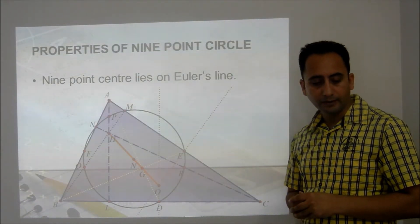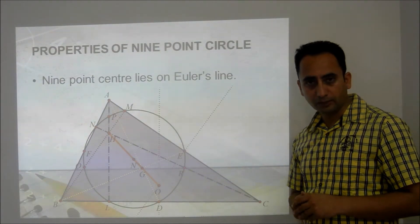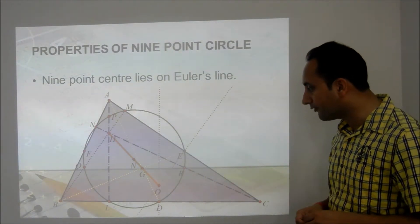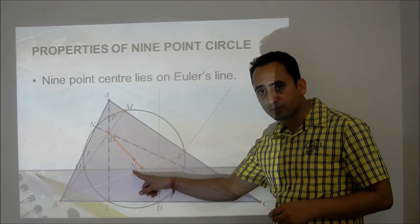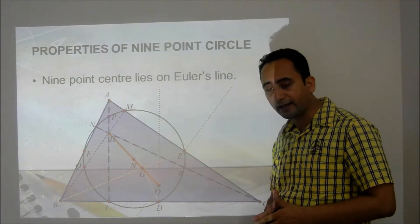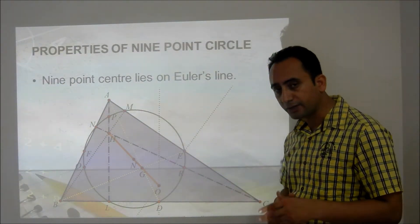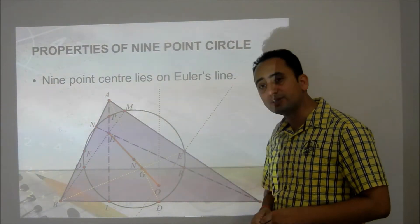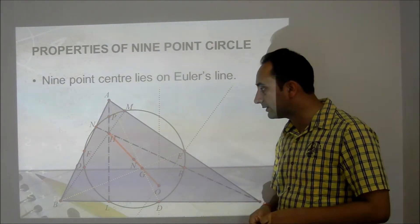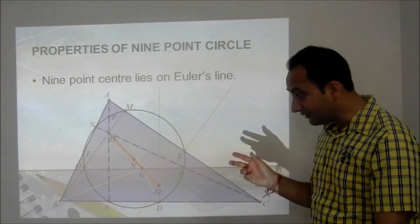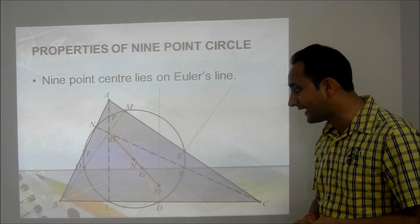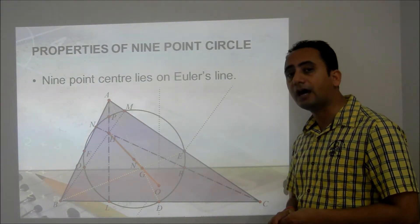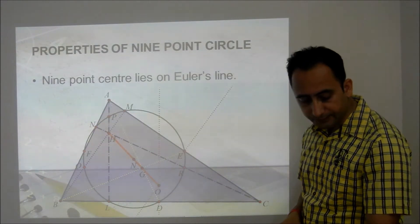Let us discuss the properties of the 9-point circle. First, the center of the 9-point circle, represented by N, lies on Euler's line — as I showed in my previous video. This means points H, N, G, and O are all collinear.